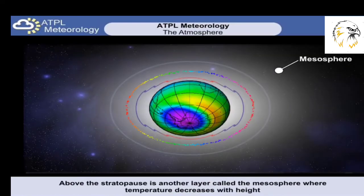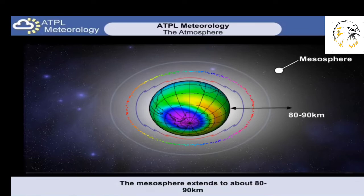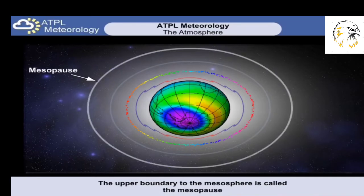Above the stratopause is a much cooler layer where the temperature continually decreases with height. This layer is called the mesosphere. It usually extends about 80 or 90 kilometers above the Earth's surface. At the top of this layer, we have some of the coolest temperatures encountered, sometimes as low as minus 180 degrees Celsius. The upper boundary to the mesosphere is called the mesopause.